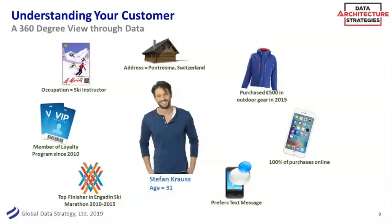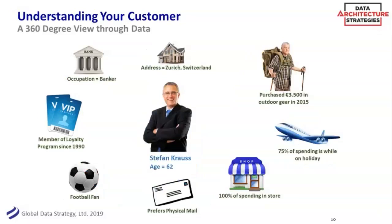But if we look through our data, there's Stefan Krauss age 31 — and there's also another Stefan Krauss who lives in Zurich and is 62, a banker, a little overweight. He actually really likes soccer, doesn't get outdoors very much. He goes once a year — goes hiking, takes a plane to get there, and spends a lot of money when he goes. He's like, 'I'm a banker, I make a lot of money, and when I'm on vacation I want the best gear.'